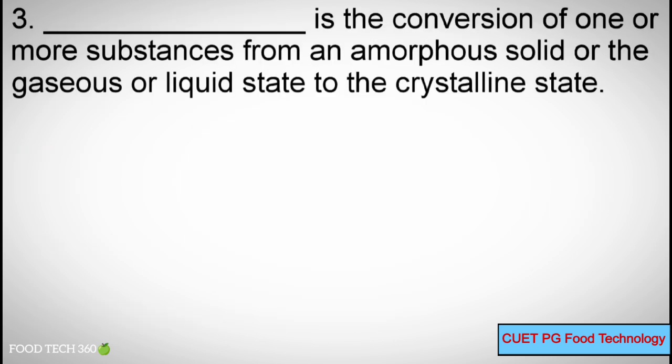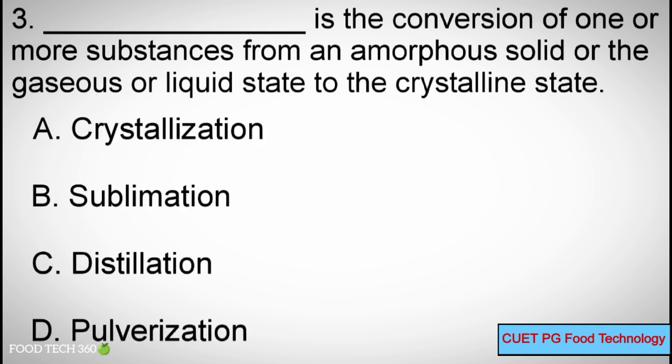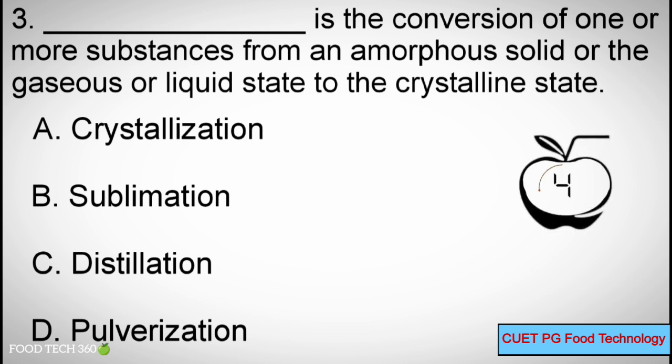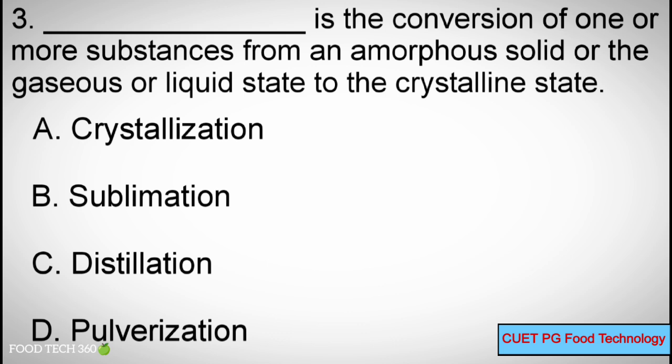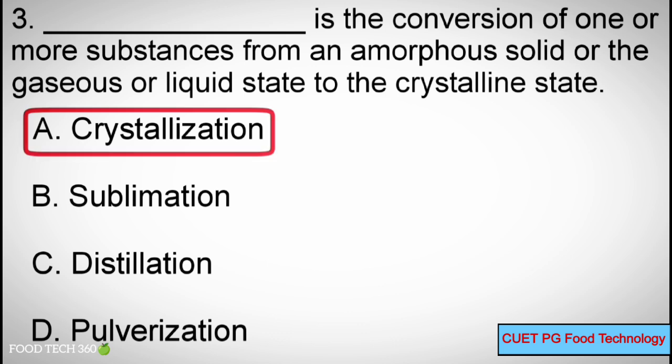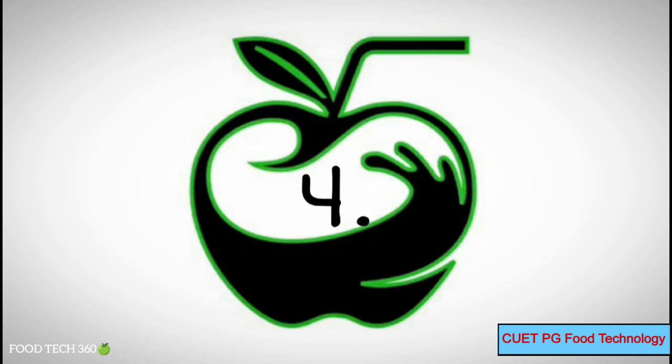Question number 3. Dash is the conversion of one or more substances from an amorphous solid or the gaseous or liquid state to a crystalline state. Options A: Crystallization, B: Sublimation, C: Distillation, D: Pulverization. Correct answer: A, Crystallization.